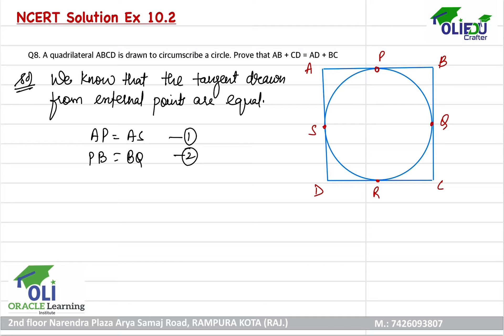Next, QC is equals to RC — that is the third equation. And DR is equals to DS — that is the fourth equation.